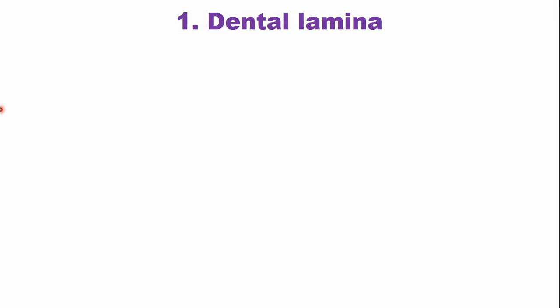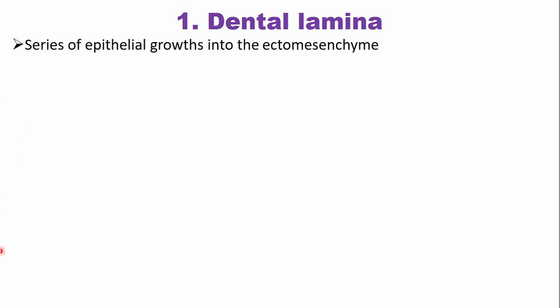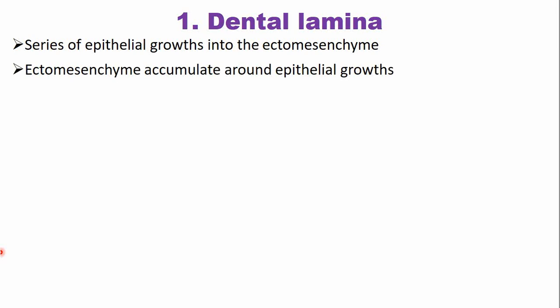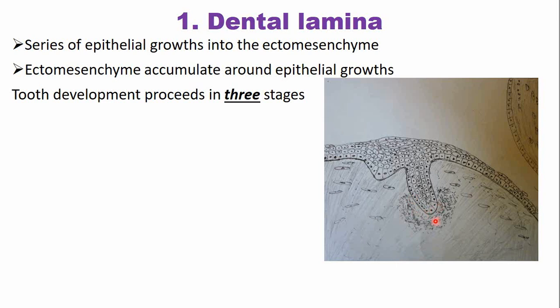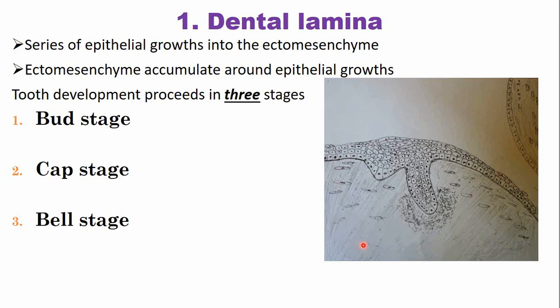As the name suggests, the dental lamina will mainly give rise to the structure of the tooth — it has the main contribution in tooth development. There are series of epithelial growths into the mesenchyme, and the ectomesenchyme cells accumulate around these epithelial growths. Development proceeds in three stages: the cells at the end of the dental lamina proliferate and assume a bud shape — this is the bud stage. The bud then transforms into the cap stage, and the last stage is the bell stage of tooth development.